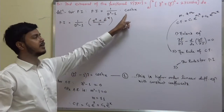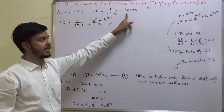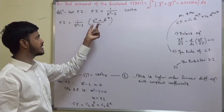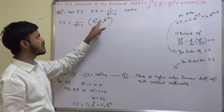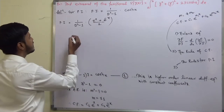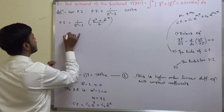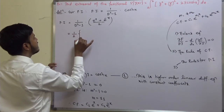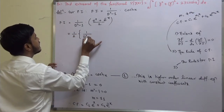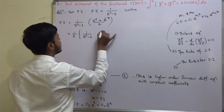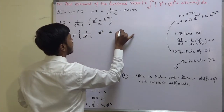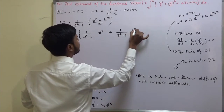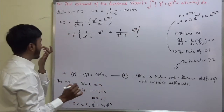Separating, PI equals one-half times [1/(D²−1) times e^x plus 1/(D²−1) times e^(−x)]. This uses Rule 1 for particular integrals involving exponential functions.